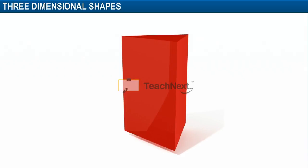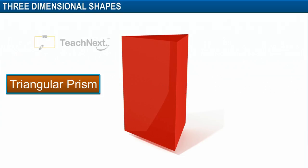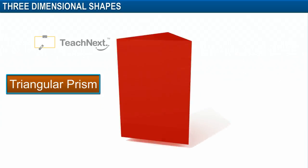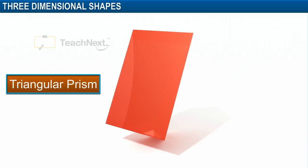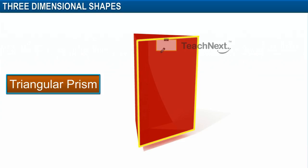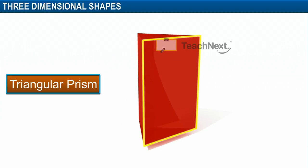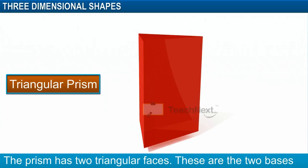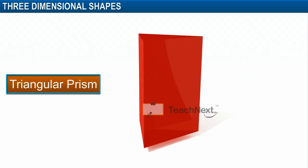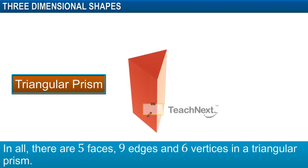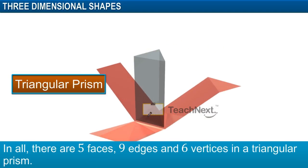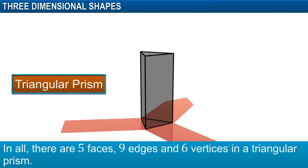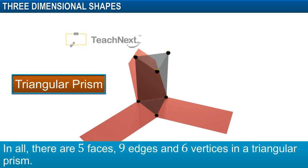Next, let's look at another three-dimensional shape, which is called a triangular prism. A triangular prism is formed with two triangles and three rectangles. The two triangular faces of the prism are called its bases. The rectangular faces form the lateral surface of the prism. In all, there are five faces, nine edges and six vertices in a triangular prism.